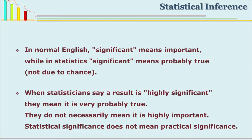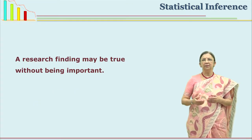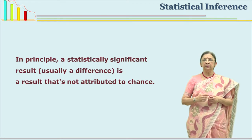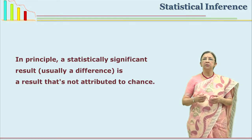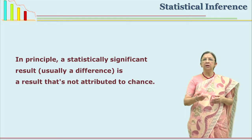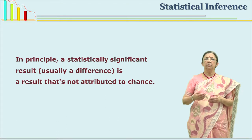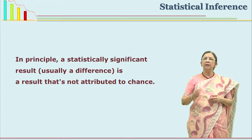In statistics, significant means 'probably true.' When you say the difference is significant, you mean it is probably true. If you say it is highly significant, it does not mean it is highly important — it means the probability of being true is more. The research finding may be true but may not be important. In principle, a result which is significant means it is not attributed to chance. We are saying this result is not because of chance or fluke. We have done serious work, and if we do it again and again it will be the same.